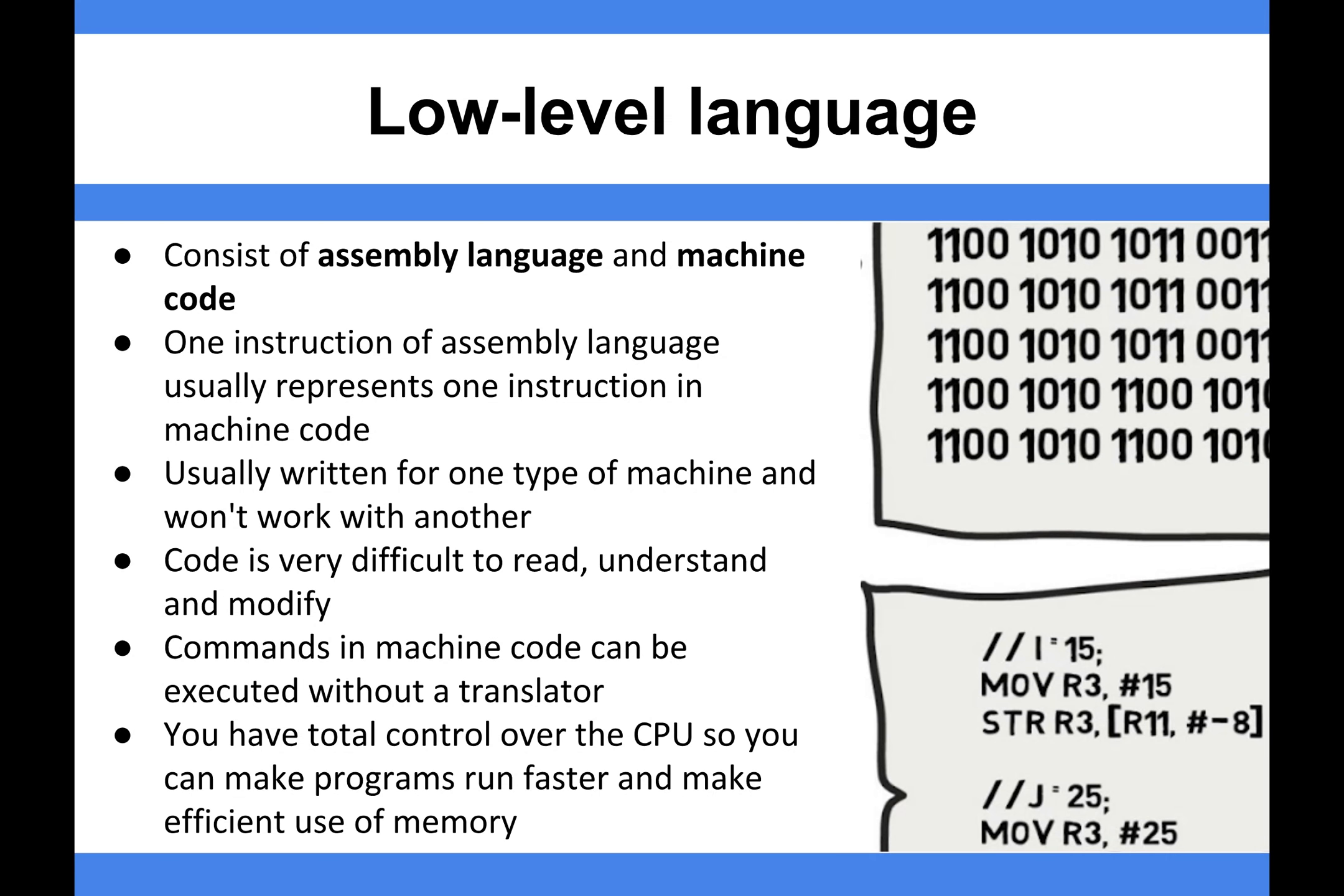Usually, assembly language is written for one type of machine and won't work with another. The reason being, these instructions might be different between processors. Typically, you write this for one type of machine and it won't work with another. Both low-level languages are written for a specific machine.